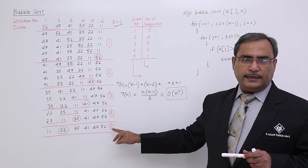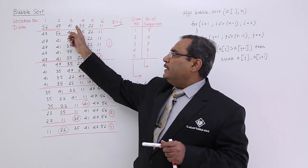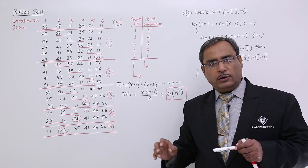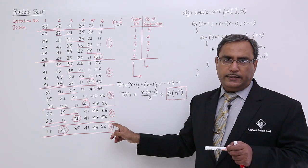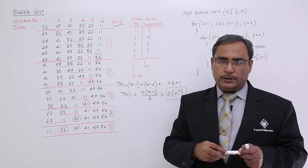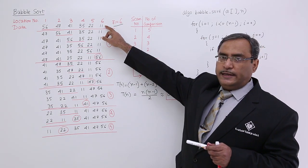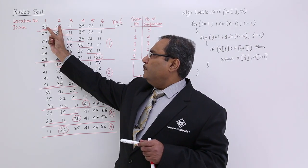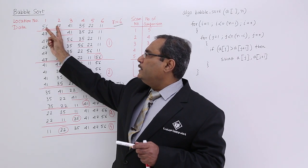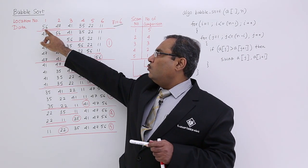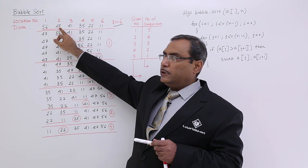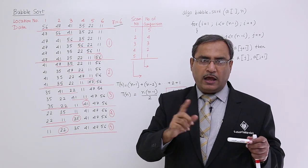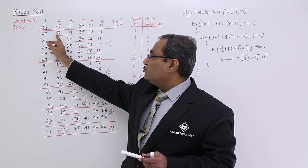We are arranging this data in ascending order. Whether the data is in unsorted order, descending, or ascending order, ultimately the algorithm will produce data in ascending order. Here I have taken the data in descending order for a specific reason. Now, what is bubble sort and how does it work? First, the numbers at location 1 and 2 will get compared.